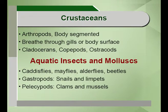Crustaceans, aquatic insects and mollusks form the next type of biodiversity. The arthropods have segmented bodies with pairs of jointed appendages and breathe through gills or the body surface; examples include ostracods, copepods and cladocerans. The aquatic insects and mollusks include caddisfly, mayflies, alderflies, dragonflies, beetles, snails, clams and mussels. These comprise the pelecypods and the gastropods, which are important parts of mollusk biodiversity.